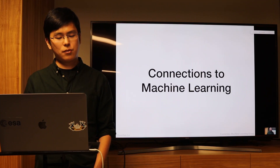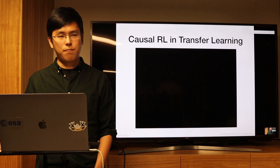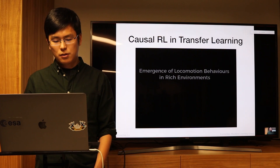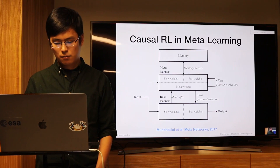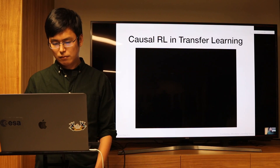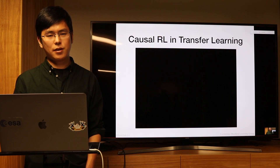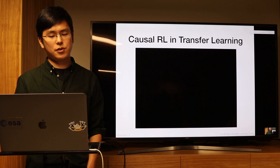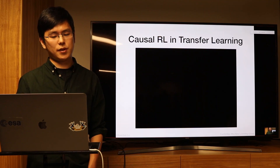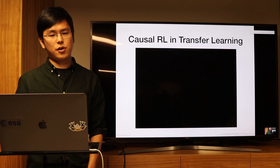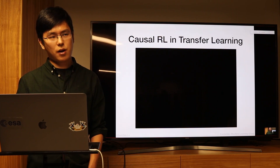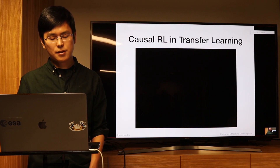Now let me describe how causal reinforcement learning works and how it connects to machine learning concepts. One connection is transfer learning. A DeepMind video shows an agent running in different terrains — they feed terrain as a known feature to the model. Using causal RL instead, you can discover robust causal structures about the environment and transfer those structures directly, without needing to know the terrain in advance.